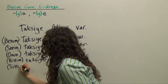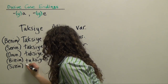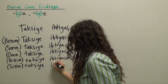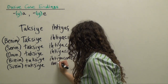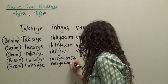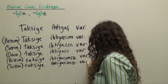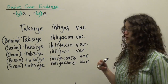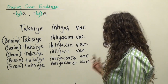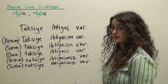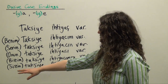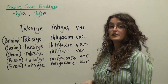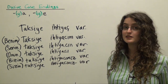For the second person plural, optionally 'sizin.' 'Taksiye ihtiyacınız var' — your need for a taxi exists, or you need a taxi. And again we can substitute 'yok': 'Sizin taksiye ihtiyacınız yok' — you don't need a taxi, your need for a taxi does not exist.